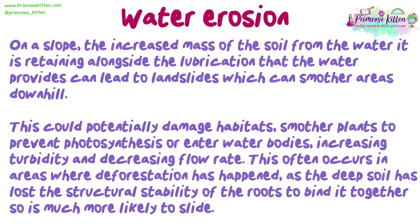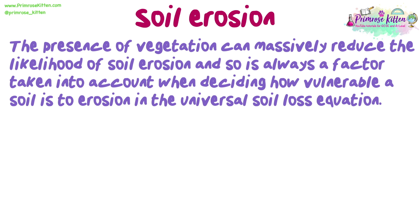This could potentially damage habitats, smother plants to prevent photosynthesis, or enter water bodies, increasing turbidity and decreasing flow rate. This often occurs in areas where deforestation has happened, as the deep soil has lost the structural stability of the roots to bind it together, so it's much more likely to slide. The presence of vegetation can massively reduce the likelihood of soil erosion, and so is always a factor taken into account when deciding how vulnerable a soil is to erosion in the universal soil loss equation.